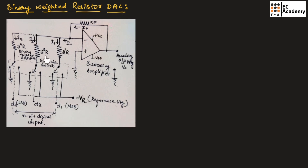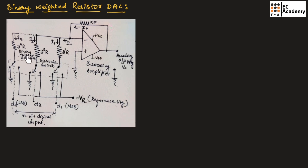This figure shows the binary weighted resistor digital to analog converter. In this circuit, the op-amp is used as an inverting summing amplifier because all the inputs are connected to the inverting terminal of the op-amp. Here, binary weighted resistors are used, which have the values 2 to the power of 1R, 2 to the power of 2R, and so on, up to 2 to the power of nR. That is why it is known as binary weighted resistor digital to analog converter. Depending upon the number of bits that should be converted into analog value, the resistors are connected in the circuit.